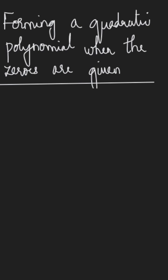let us understand how to form a quadratic polynomial when the zeros are given to us. To understand, let us first understand the relationship between the zeros of the polynomial and the coefficients of the polynomial. So if alpha and beta are the zeros of the polynomial, ax square plus bx plus c,